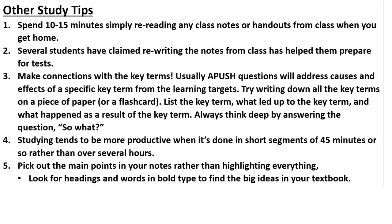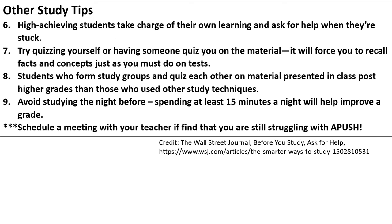For general study tips: spending 10 to 15 minutes recapping what you did in AP US History each night helps a ton. Two students who made fives on their exams would go home and rewrite their notes — that helped them make connections. Always remember you're looking for the significance of a key term, not simply what it is. Quizzing yourself or having someone else quiz you is very effective, and study groups help especially when preparing for the AP exam. Don't wait the night before to cram — 10 to 15 minutes of regular studying will help your grade.